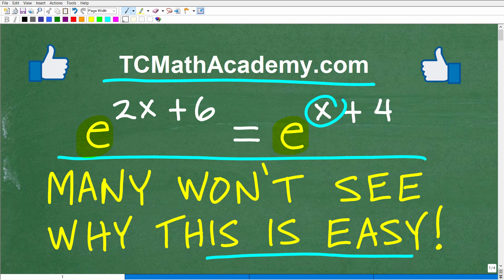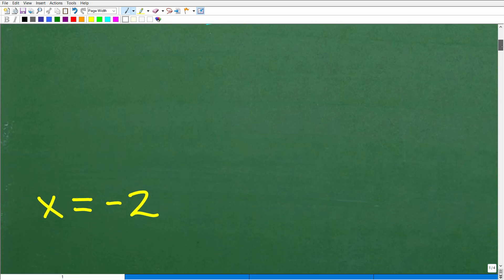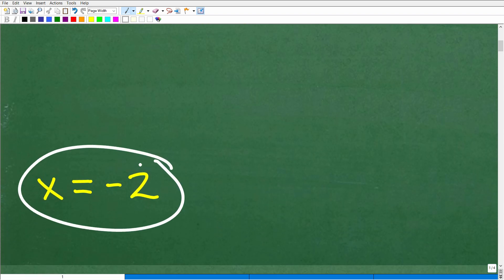And if this video helps you out, don't forget to hit that like and subscribe button, as that definitely helps me out. All right, let's go take a look at the answer. So the problem here is e to the 2x plus 6 is equal to e to the x plus 4. We're looking to solve for the variable x. And what is the answer? x is equal to negative 2.